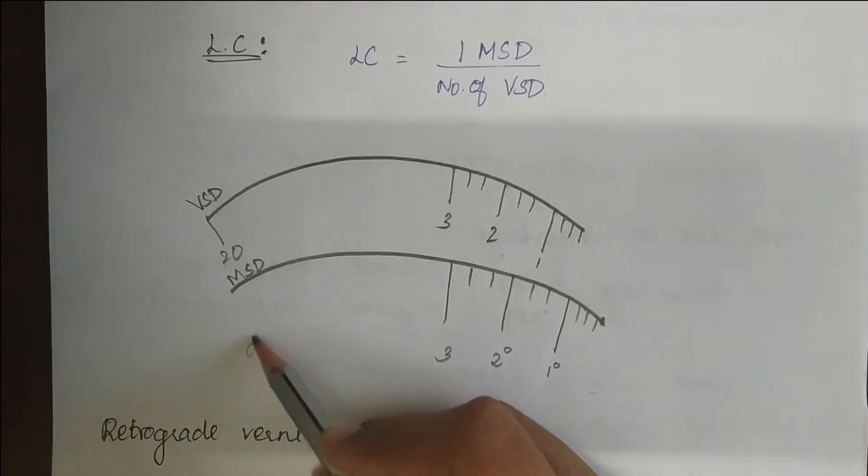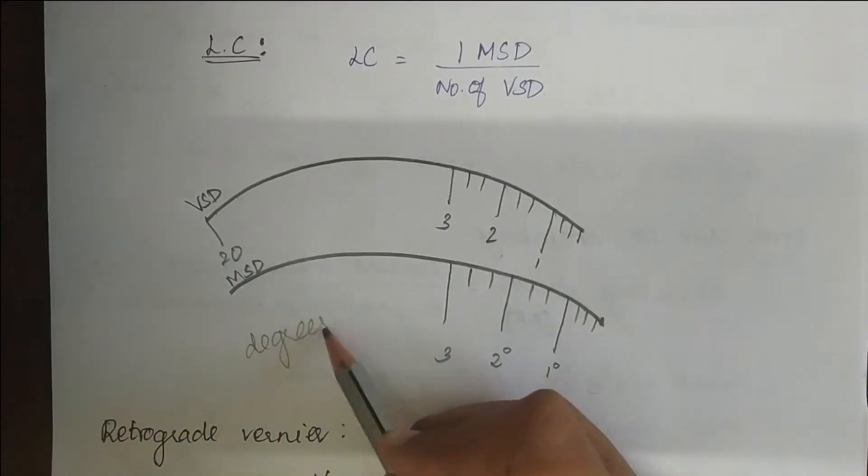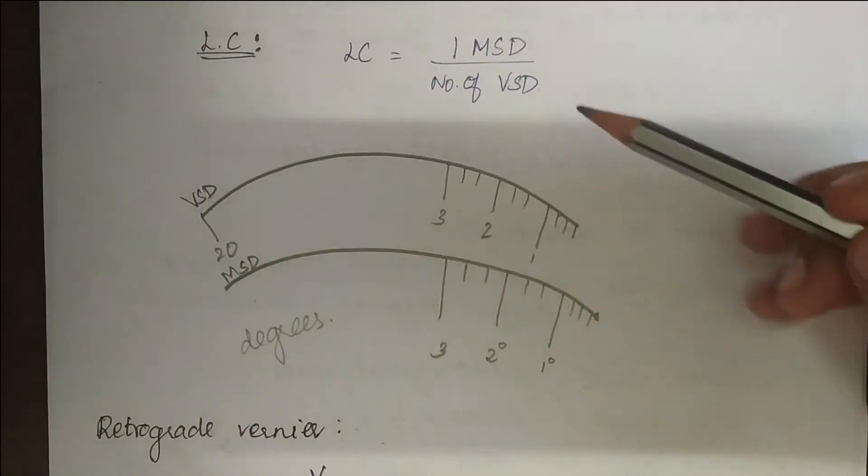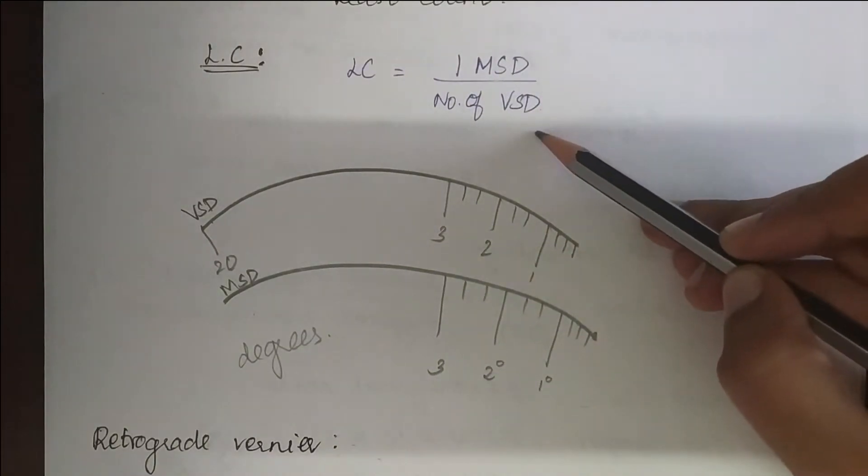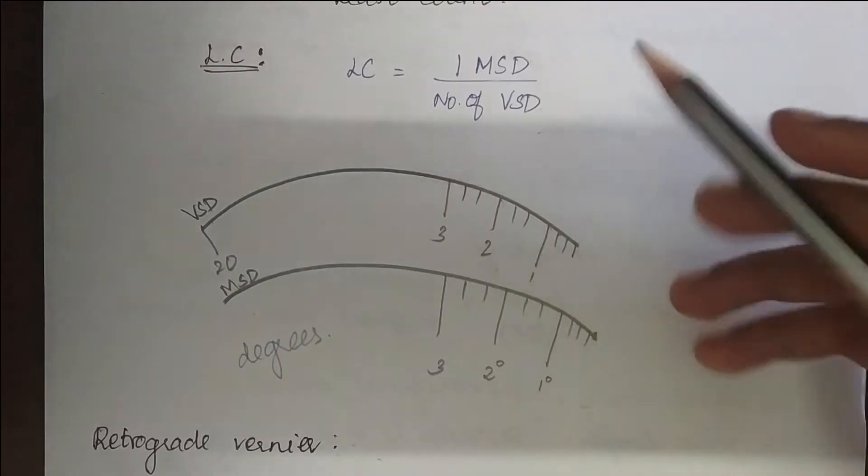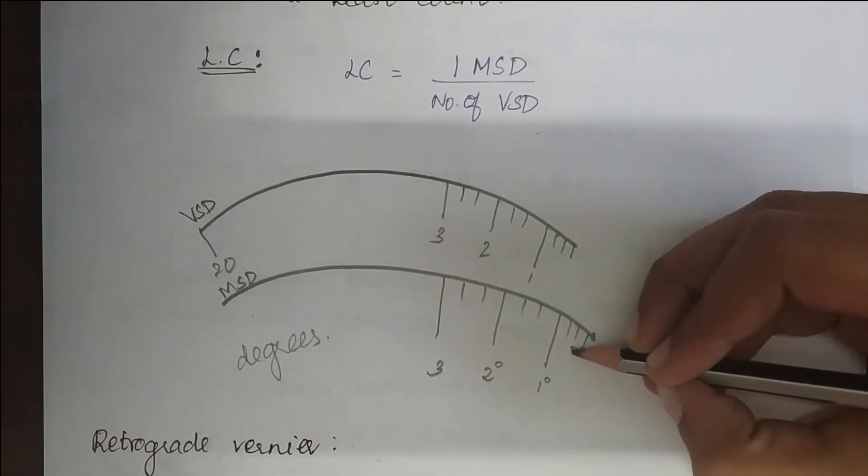The main scale division is in degrees. So by formula it is one main scale division divided by number of vernier scale divisions. So one main scale division, this part is one main scale division.